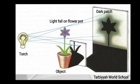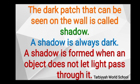When the torch shines light on the flower pot, a dark patch becomes visible on the wall — that dark patch is the shadow. The shadow is always dark. A shadow is formed when an object does not let light pass through it.